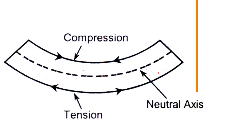These stresses developed due to compression and tension are called bending stresses. There is one layer in between the compressive zone and the tension zone where no stresses are developed — it is neither elongated nor compressed, so this layer remains as it is. Above this layer there is compressive stress and below it there is tensile stress — that layer we call the neutral layer.